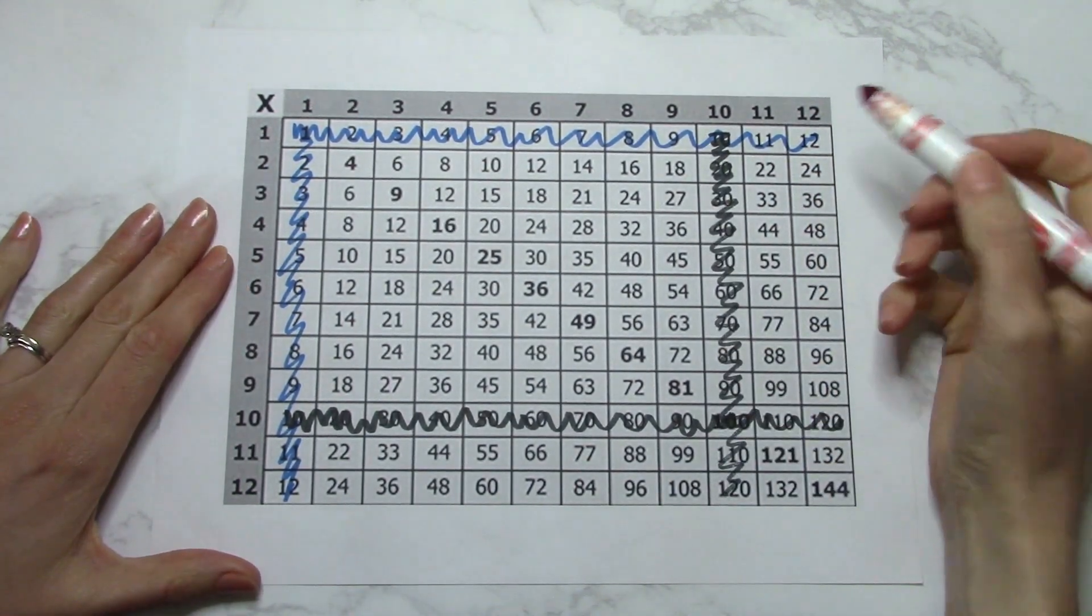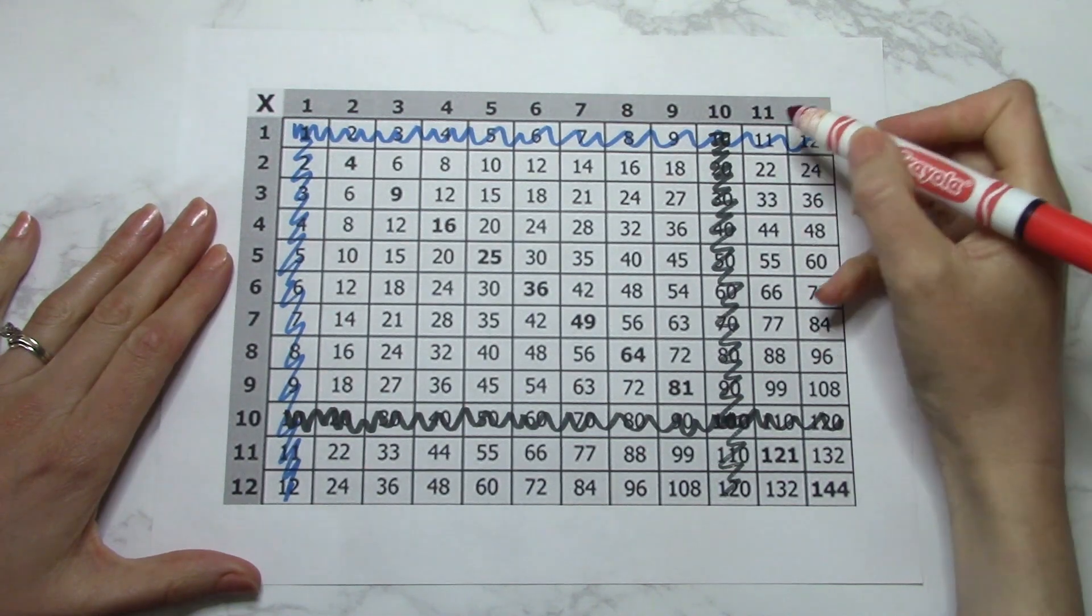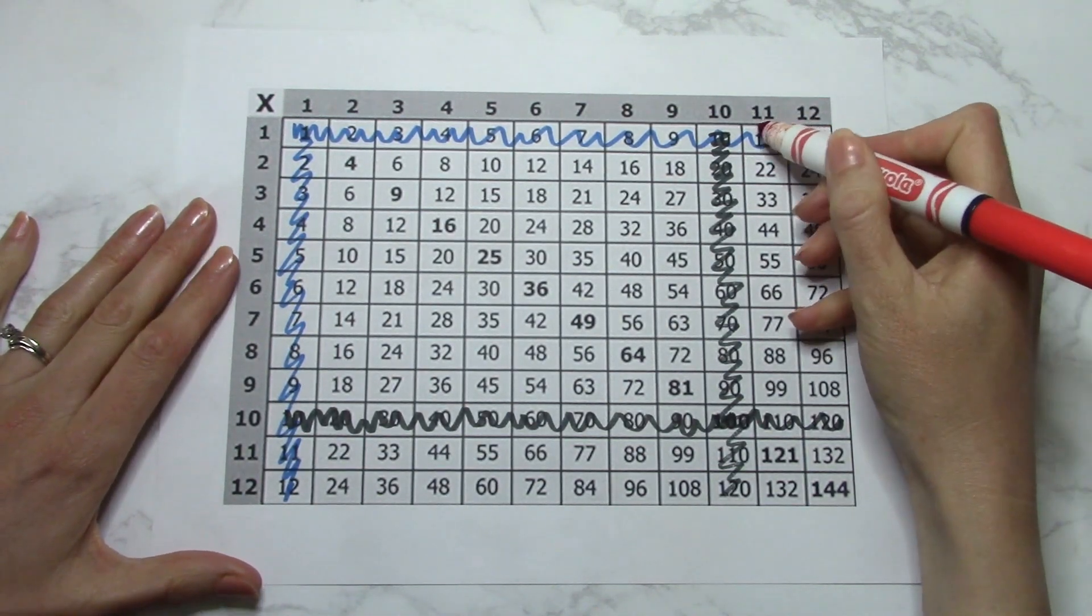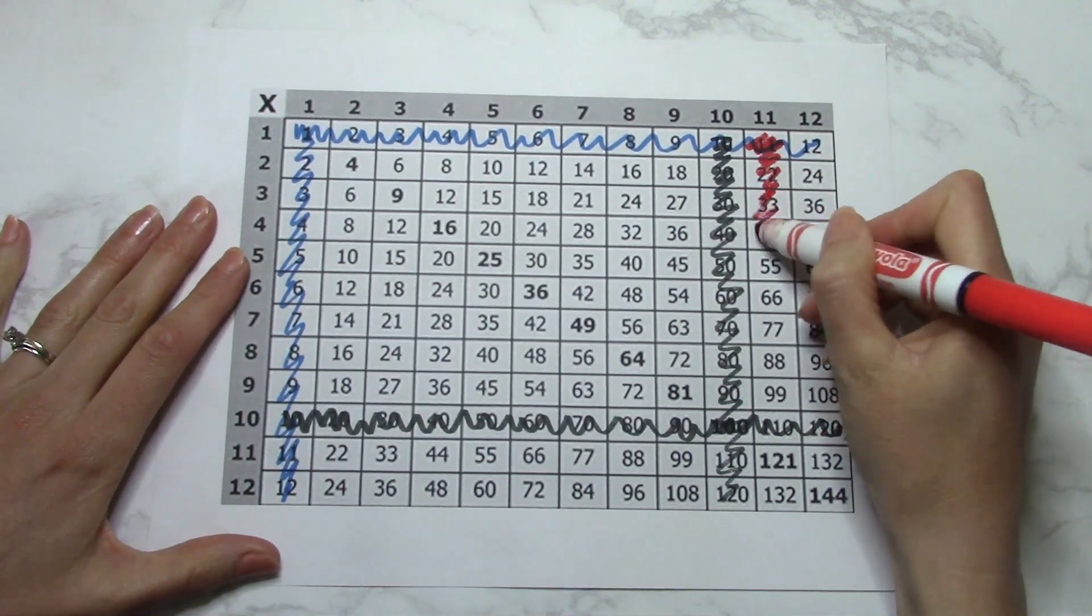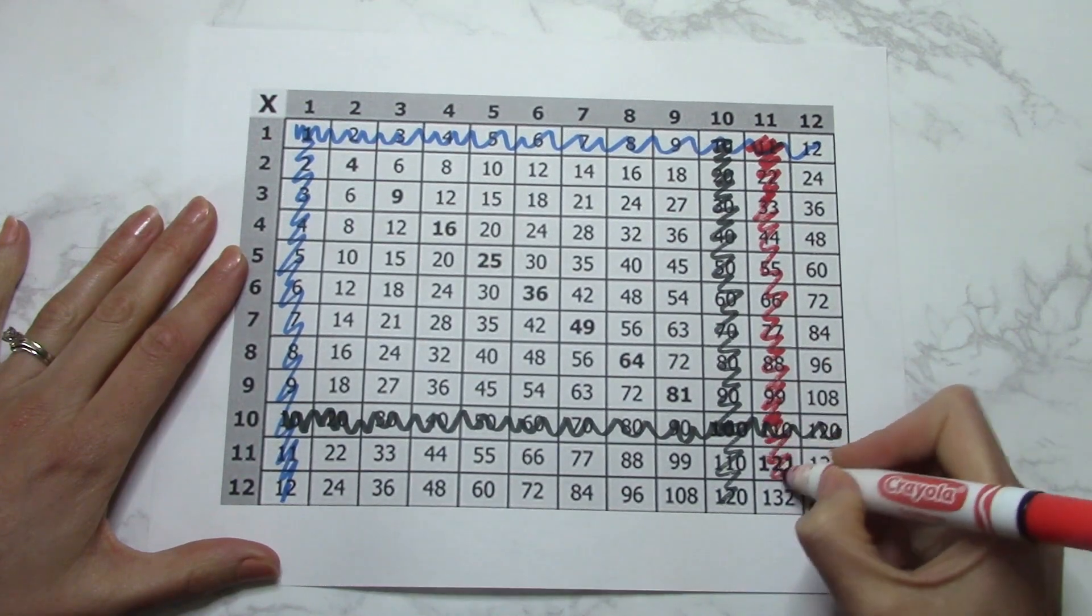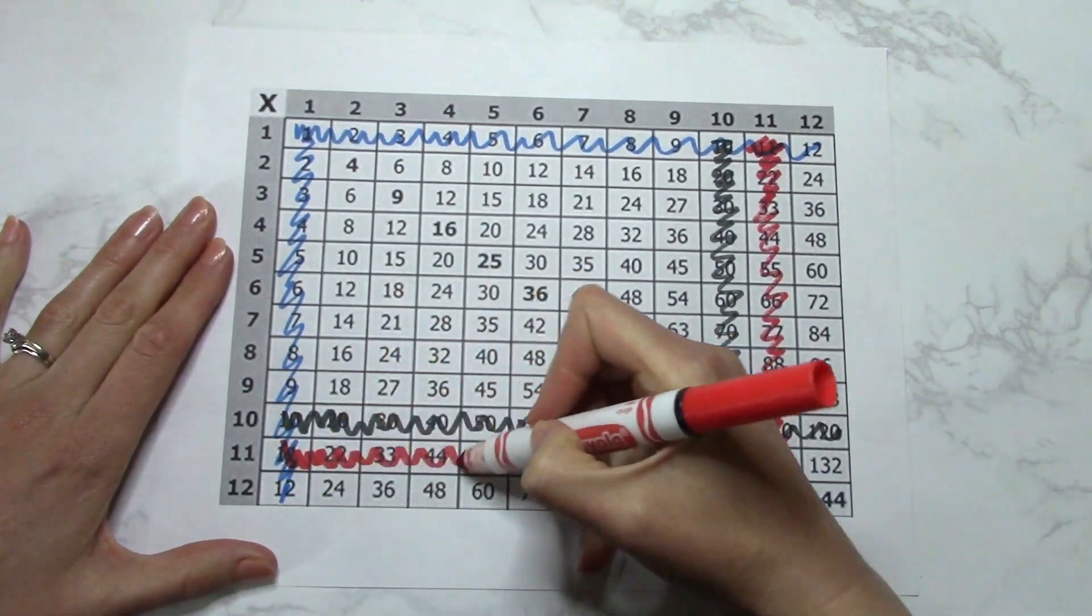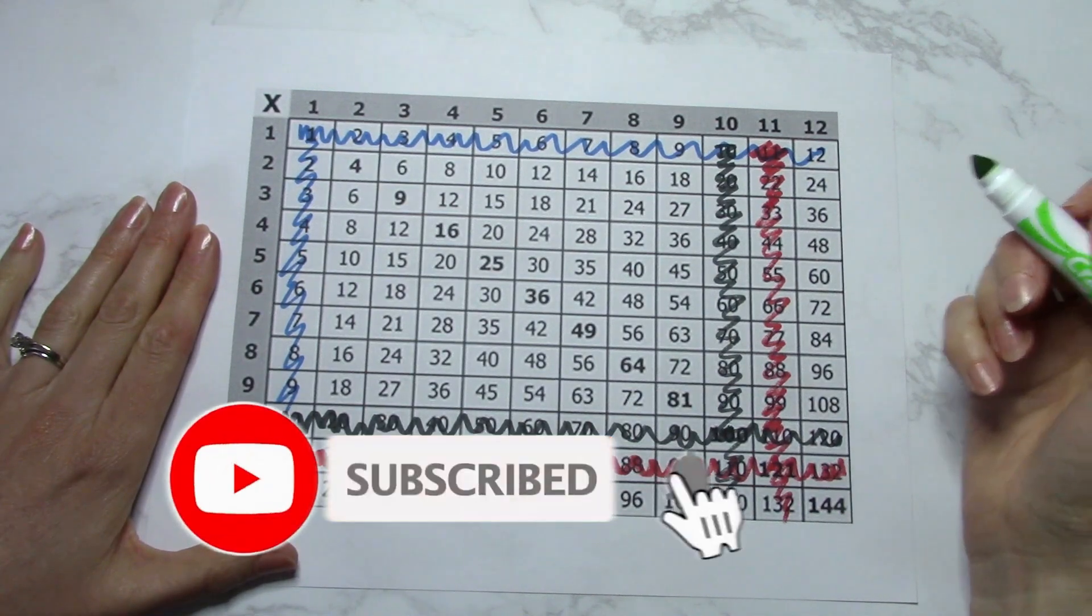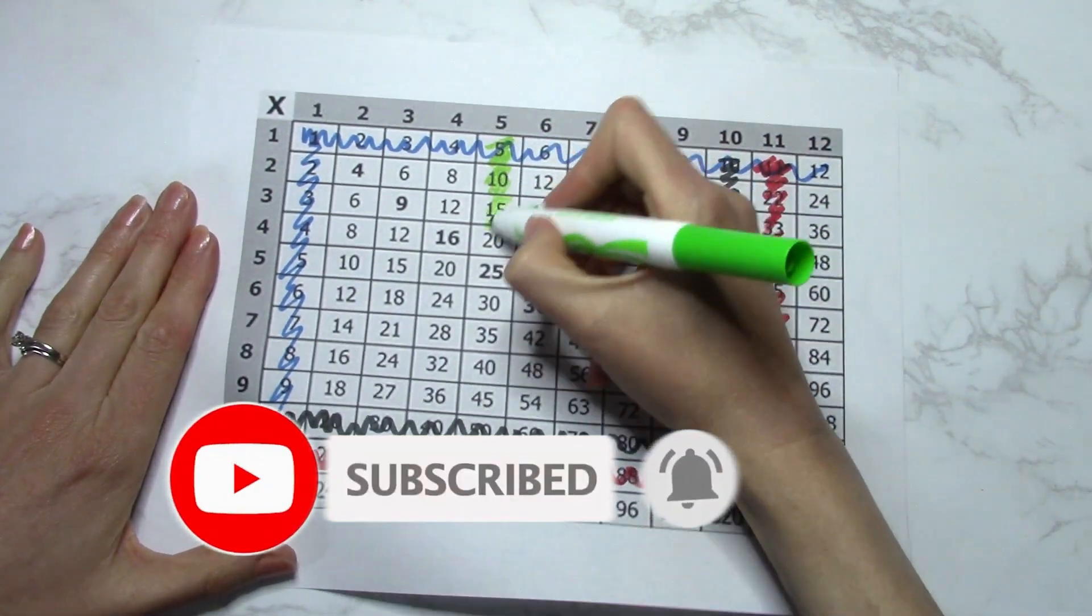Now the 11s are also just as easy because 1 times 1 is 11, 2 times 11 is 22. You just double the number. And on these ones here that get a little bit harder, just use a calculator. Alright, we've got our fives down: 5, 10, 15, 20, 25, 30, 35, 40.